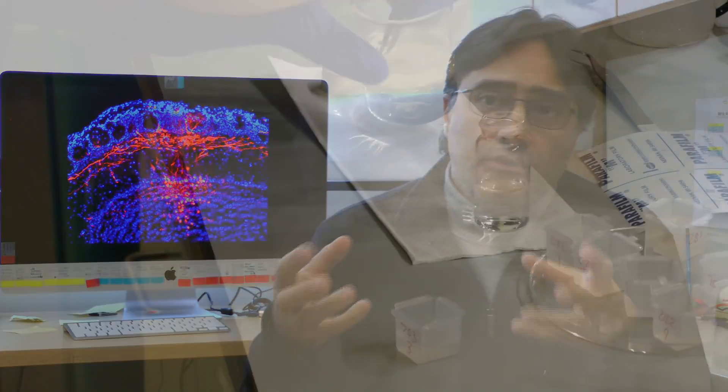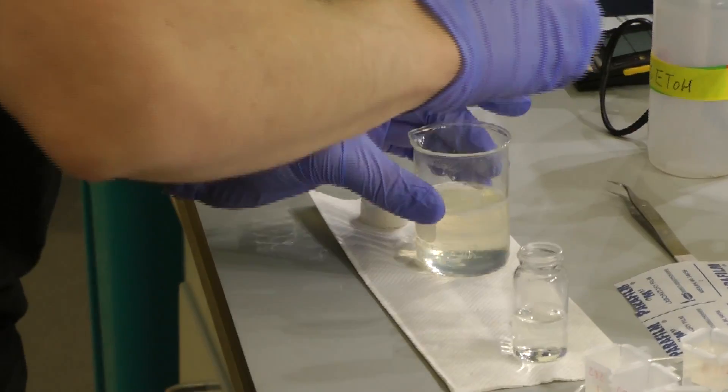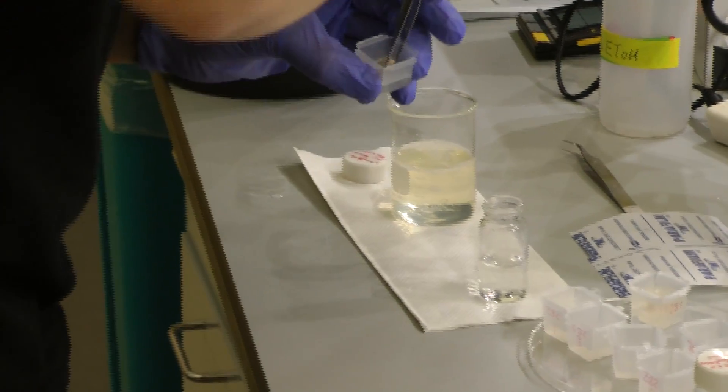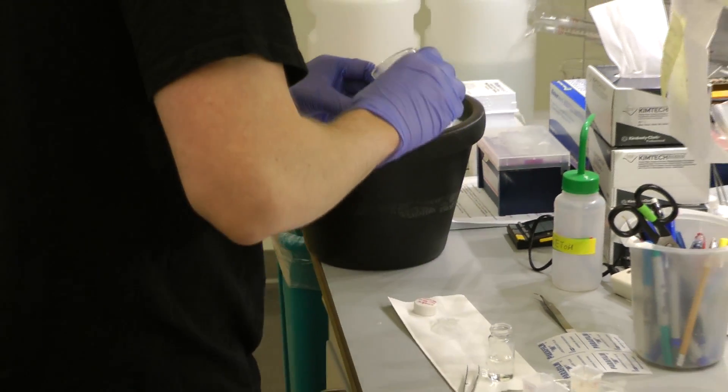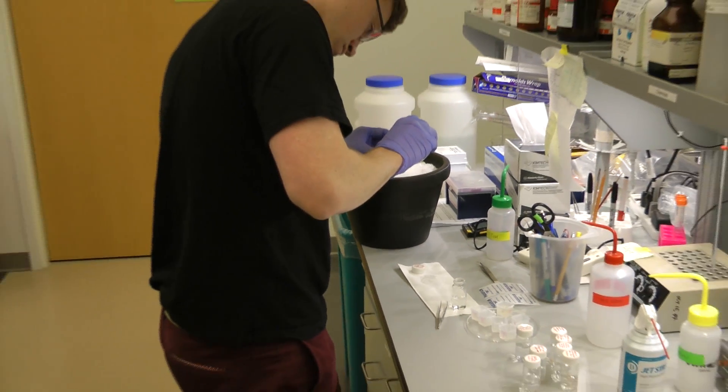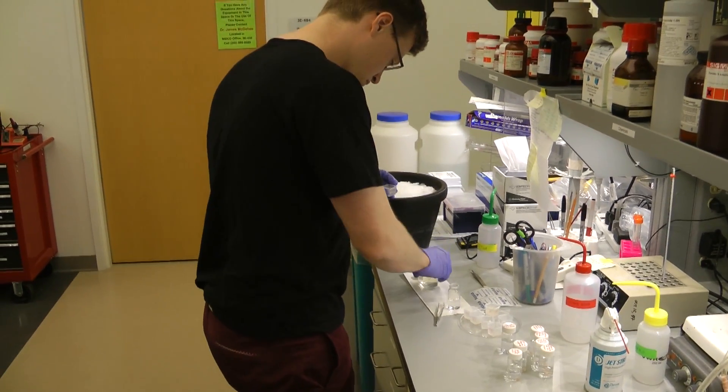Our previous work actually demonstrated that the connections between the two halves of an olfactory bulb are quite plastic and sensitive to environmental stimuli. So that if you block the nose, you can actually change the connections between the two sides of the bulb.